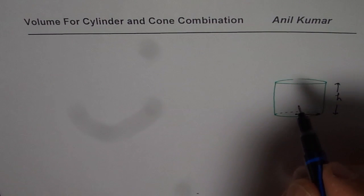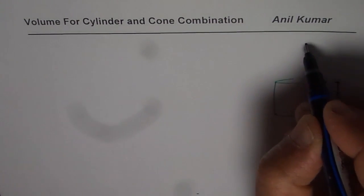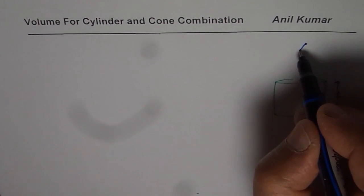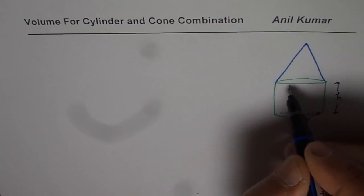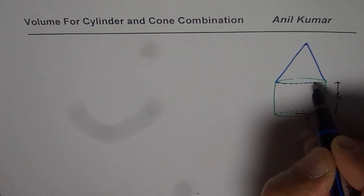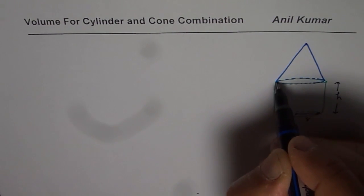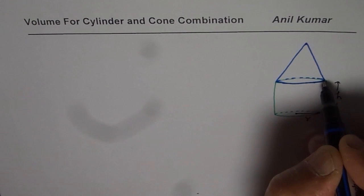Now what we will do is we will put a cone on top of it. So let us say we put a cone here, so it forms a structure like this. That is the cone on top of the cylinder.